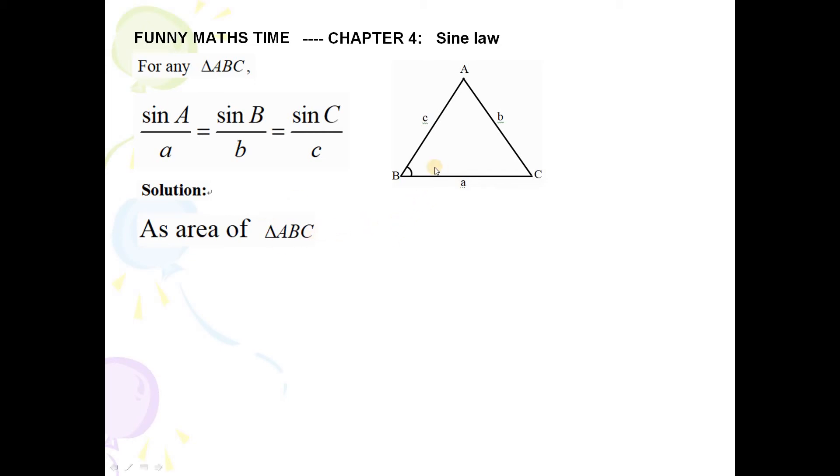First version is equal to 1 over 2 AC sin B. B is angle. And also, 1 over 2 AB sin C. And the final, the last version is 1 over 2 BC sin A.